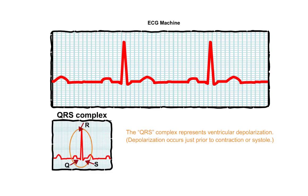The QRS complex represents ventricular depolarization. Depolarization occurs just prior to contraction, or systole.